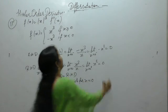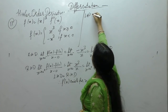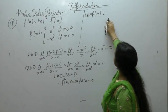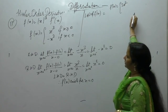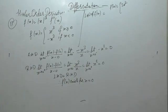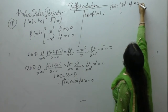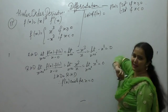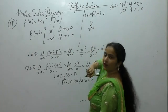Now we want to check if the second order derivative exists. The left hand derivative of f'(x): since f(x) is differentiable, f'(x) equals 3x² if x is greater than or equal to 0, and minus 3x² if x is less than 0.